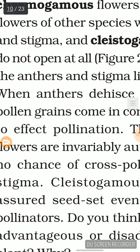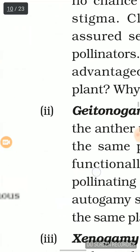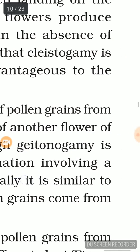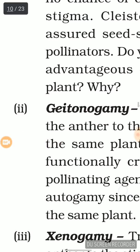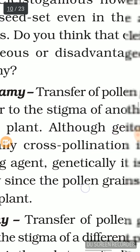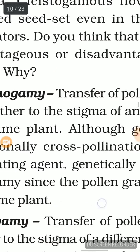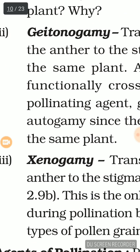Now let's see the second type of pollination: geitonogamy. This is the transfer of pollen grains from the anther to the stigma of another flower on the same plant. Although geitonogamy is functionally cross-pollination involving a pollinating agent, genetically it is similar to autogamy since the pollen grains come from the same plant.